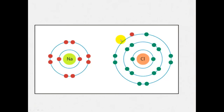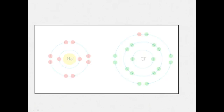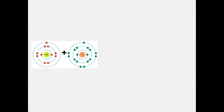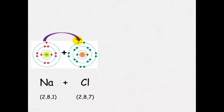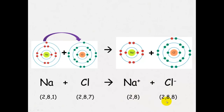When you put sodium with chlorine, the sodium will donate its electron to the chlorine to form sodium ions and chloride ions. We can demonstrate this in an electron transfer diagram. Here we have the sodium atom and chlorine atom with their electron configurations written underneath. This electron moves — shown with an arrow — to give us the sodium ion and the chloride ion. These now have charges, and these are the new electron configurations.